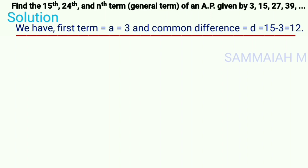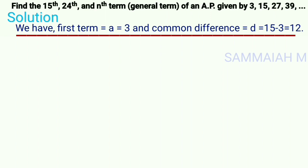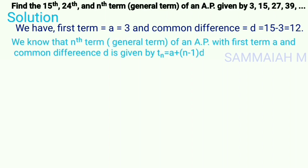Solution: we have first term a = 3, and common difference d = t2 minus t1 = 15 minus 3 = 12. So here a = 3 and d = 12.